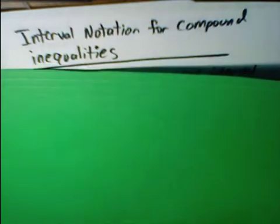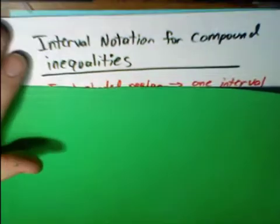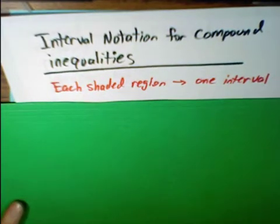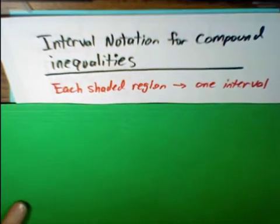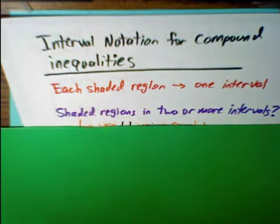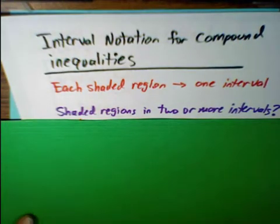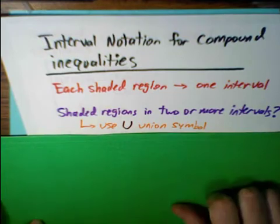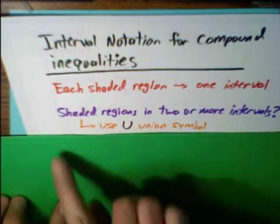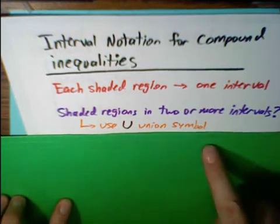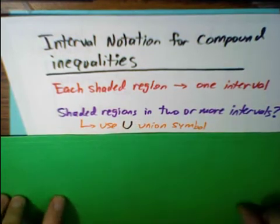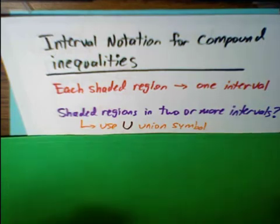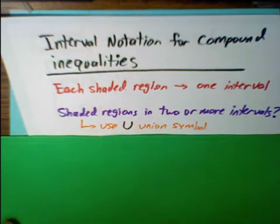So let's take a look at what we need to do for a compound inequality. Each shaded region is one interval, but if we have a shaded region in two or more intervals, we're going to use the union symbol. So if you have shaded regions with a space between them, you need to use the union symbol to mean that we want all the points that are shaded.